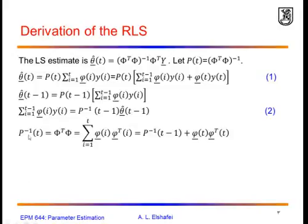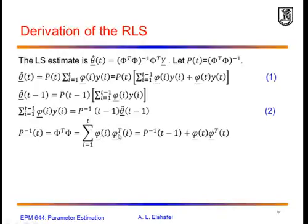P inverse, according to the definition of the covariance matrix, is phi-transpose times phi. That product can be written in terms of the columns of phi-transpose and rows of phi, as a summation from 1 to t. Taking the part from 1 to t minus 1 gives us the inverse of matrix P at t minus 1, plus the last term phi of t times phi-transpose of t.